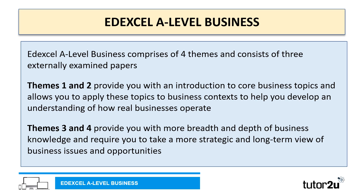Let's begin by looking at how Edexcel A-Level Business is structured. The course comprises of four themes and consists of three externally examined papers. Themes one and two will provide you with an introduction to core business topics, allowing you to apply these to business contexts and develop an understanding of how real businesses operate. Themes three and four provide more breadth and depth of business knowledge, requiring a more strategic and long-term view of business issues and opportunities, building on the content covered in themes one and two.